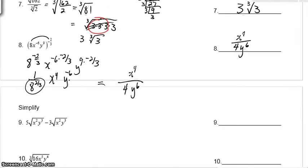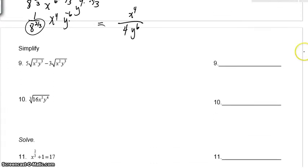Okay, as we move on to the second page here, as we look at number 9, we really have like terms. It's kind of like 5w minus 3w. These radicals might look more involved. But if I gave you 5w minus 3w, you'd say it's 2w. Well, very much the same idea. This is 2 square root of x squared y to the 3rd.